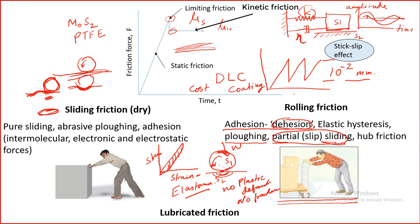Slip also happens in rolling action. There is also some amount of hub friction — for example if you have this axle and wheel, in the hub there will also be some amount of friction and therefore you need a bearing there. These are the contributions of energy dissipation to rolling friction.